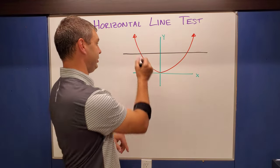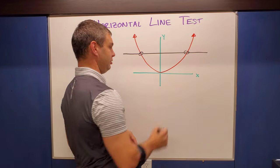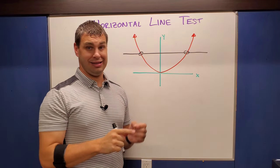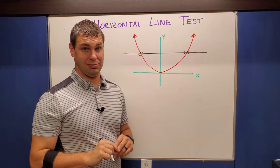So how many times does this one cross? Well, it crosses there one, two, two different times. And since that's more than once, its inverse is not going to be a function.